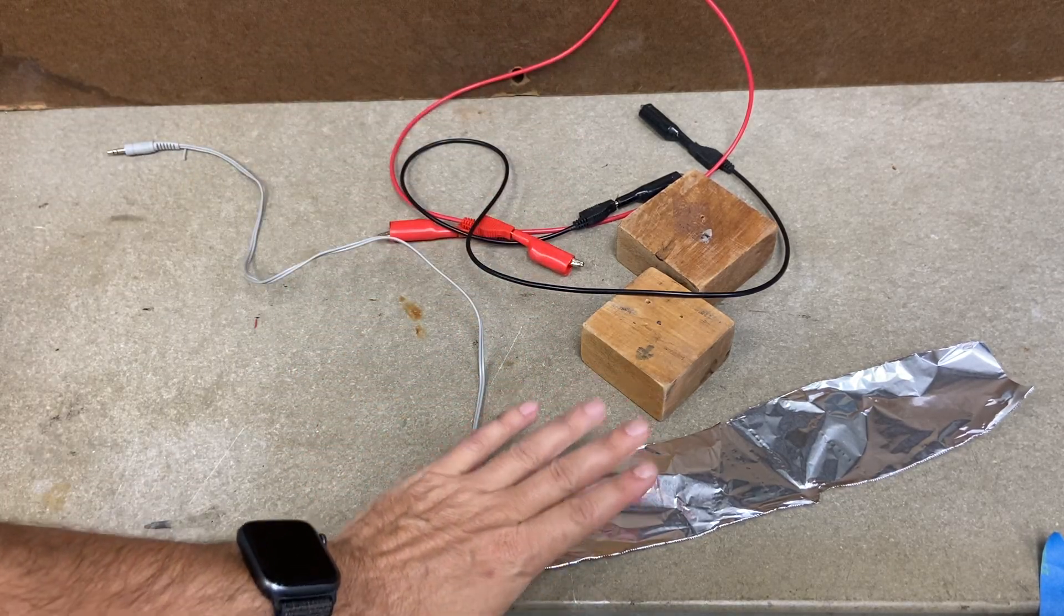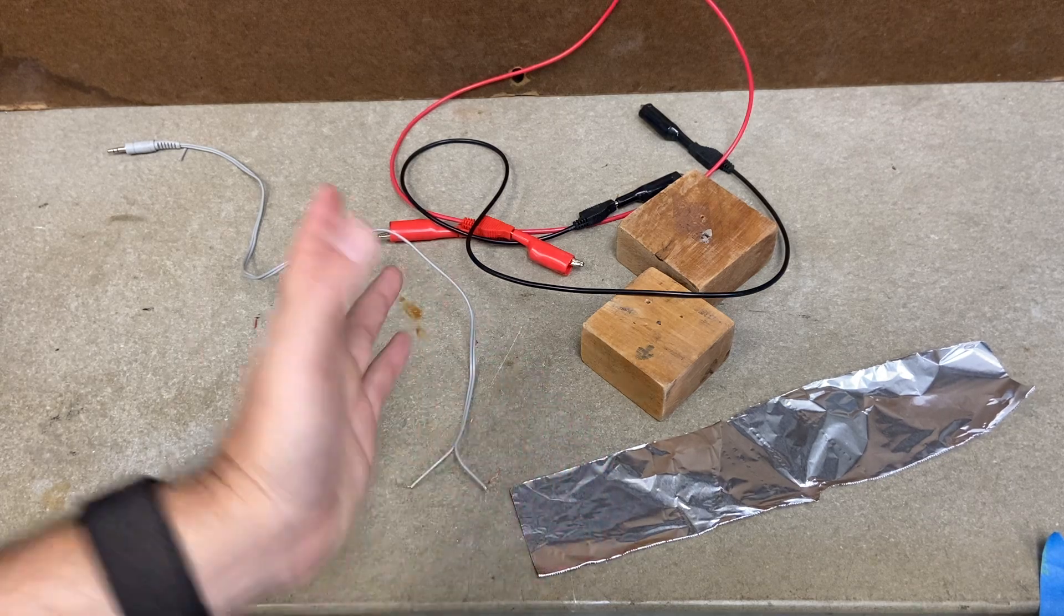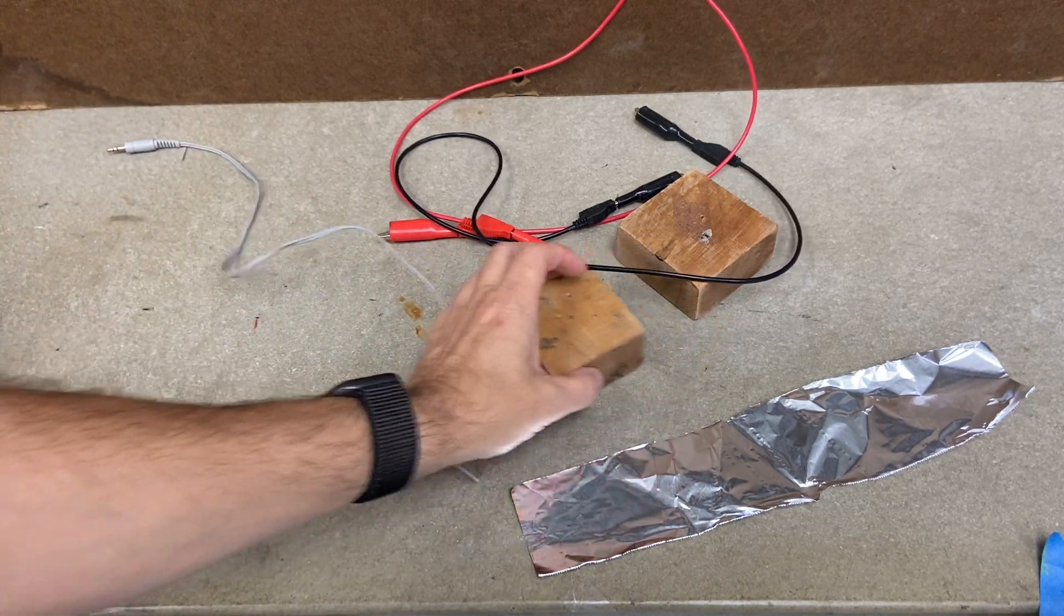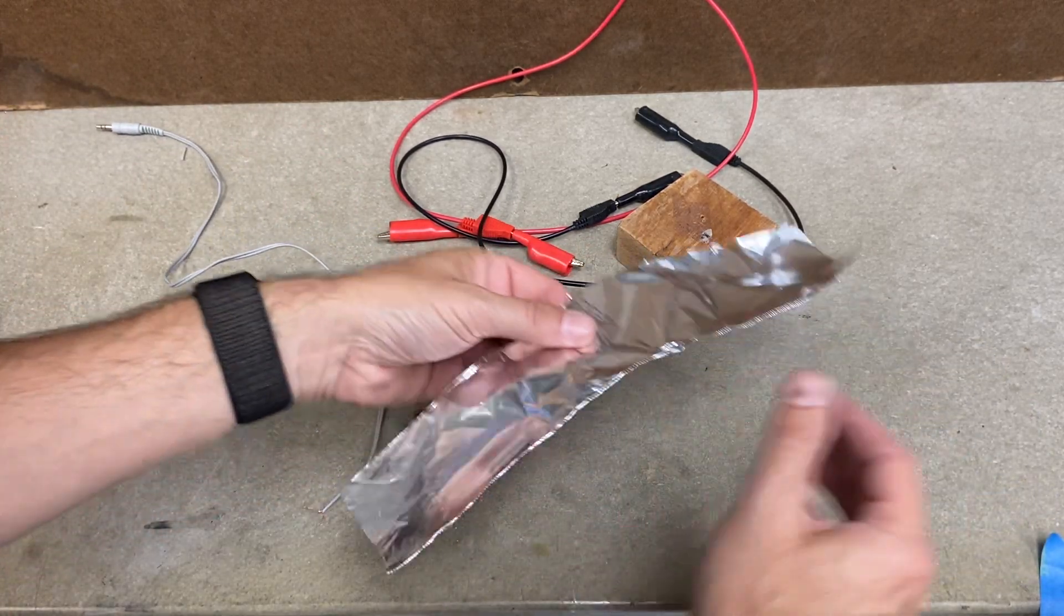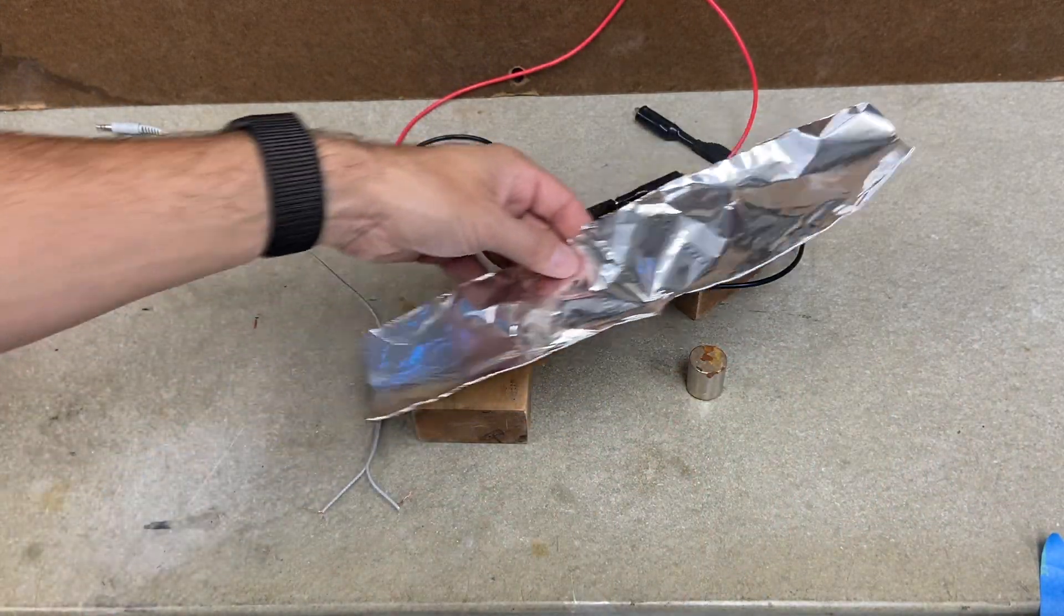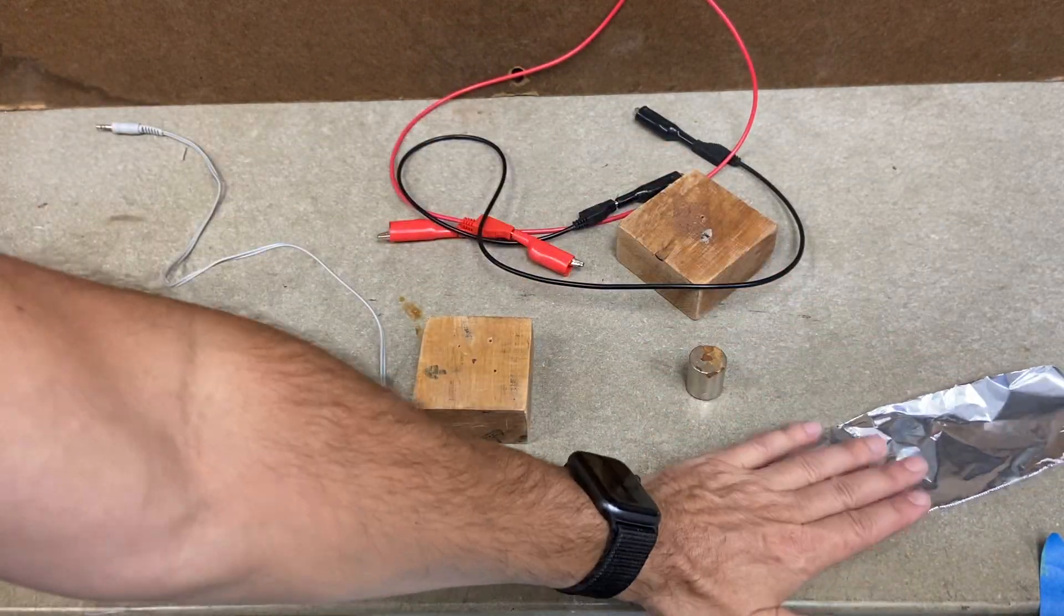Let's make a speaker with aluminum foil. I saw this online and want to try it. The main idea is to take aluminum foil and a strong magnet, run current through the aluminum foil, and it will move up and down and make noise.